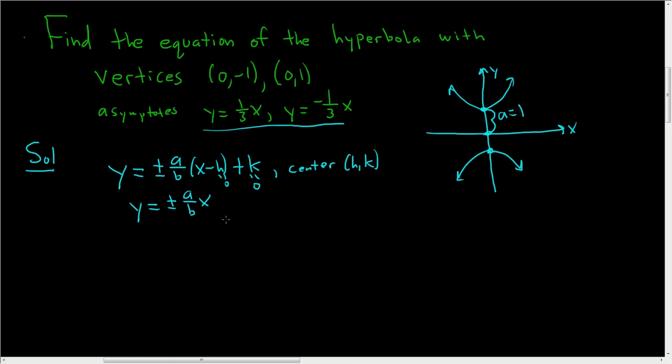And we just need to find b. So what we'll do is we'll take the slope of one of our asymptotes. Let's take this one, 1 third. And we'll set it equal to a over b. So 1 third is equal to a over b.